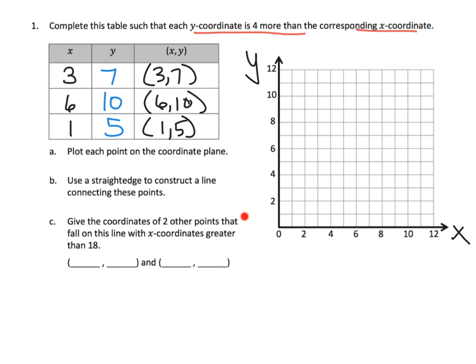And we're going to plot those points. Our first point, 3, 7, is going to go right there. There's 3, 7, because we've got 3 on the x-axis, 7 on the y-axis. Now we're going to do 6, 10. So that's going to be 6 on the x-axis, 10 on the y-axis, and that's going to put us right there. And then the last one, 1 on the x-axis, 5 on the y-axis, and that's going to put us right there.